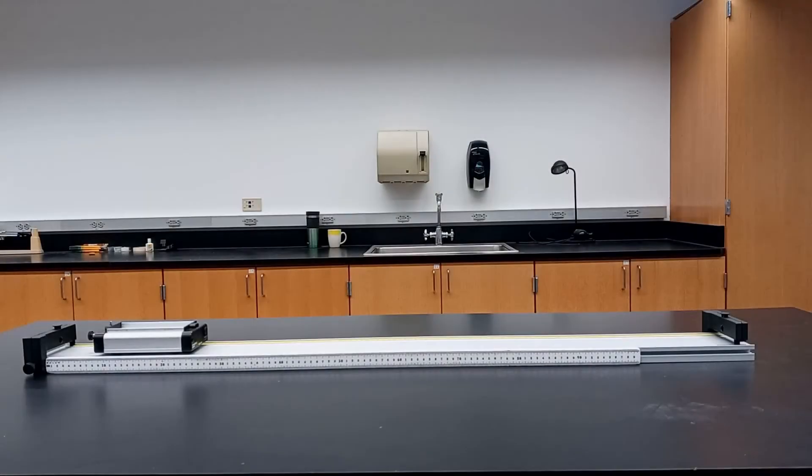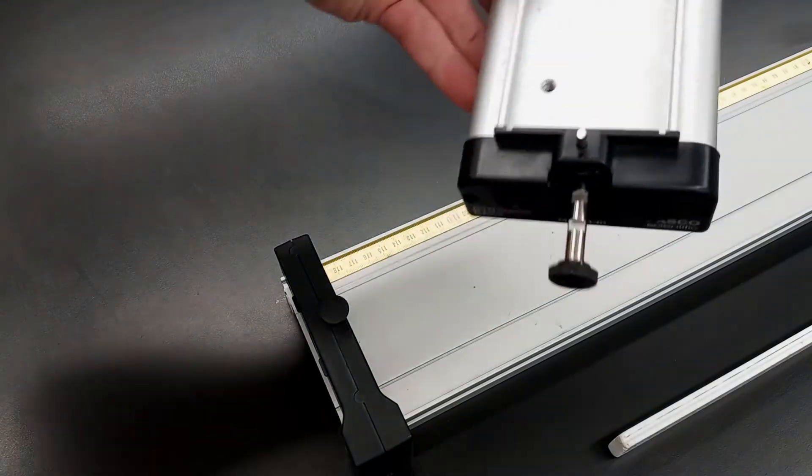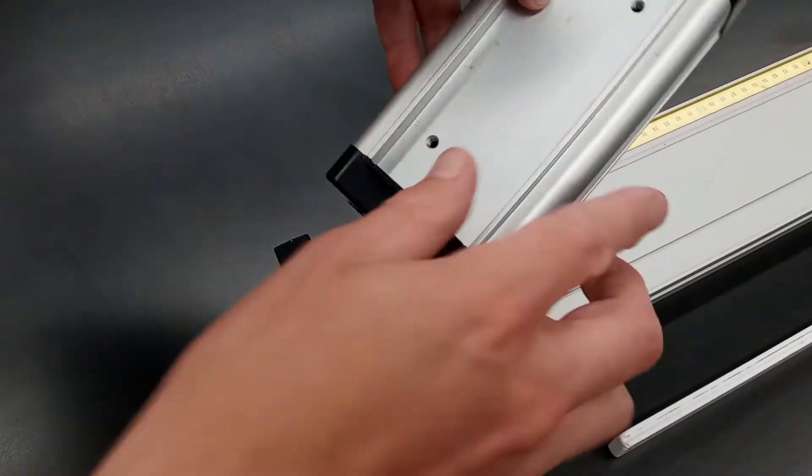Here's our setup. We've got a cart with narrow wheels on a flat metal track so that there's very little friction. The cart has a spring plunger at one end, and we can use this to launch the car with a very consistent velocity.